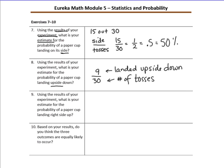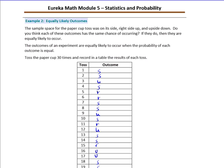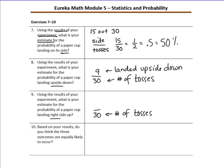Number nine: using the results of your experiment, what is your estimate for the probability of a paper cup landing right side up? I know the denominator is 30 because that is the number of tosses. Counting all the R's, the number of times it landed right side up was 6 times, so 6 out of 30. The numerator is the number of favorable outcomes, and the denominator is how many times you performed the experiment — 30 times.